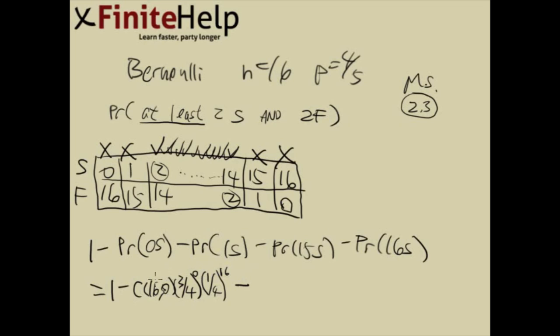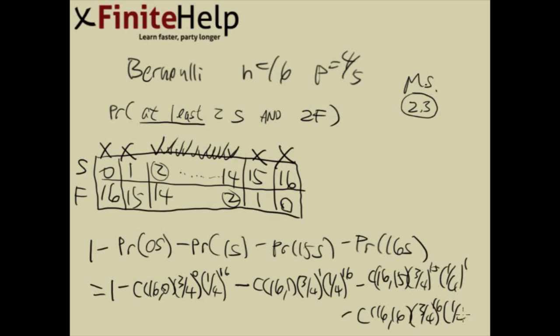And then here we subtract 1 success. So 16 choose 1, probability of success again 3 fourth to the 1, 1 fourth to the 15. And then here's going to be 16 choose 15, 3 fourth to the 15, 1 fourth to the 1. And then finally 16 choose 16, 3 fourth to the 16, 1 fourth to the 0.